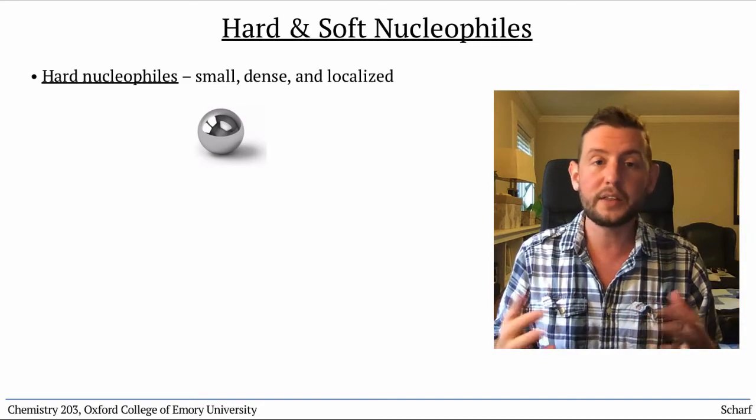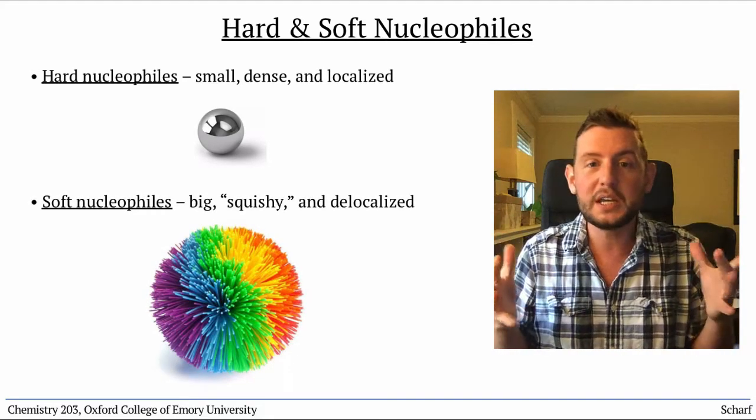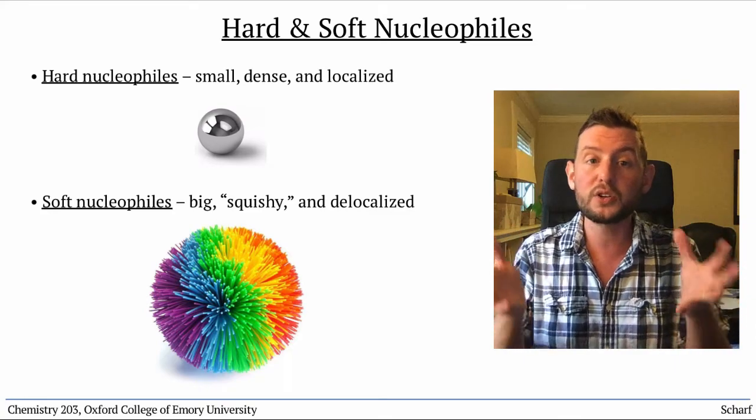Soft nucleophiles, on the other hand, are like big koosh balls. They are squishy, and they have their negative charge spread out over a larger area.